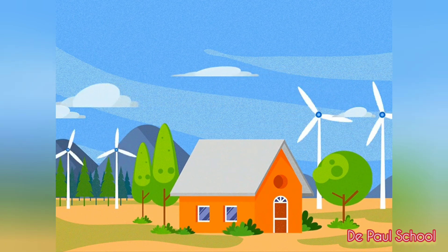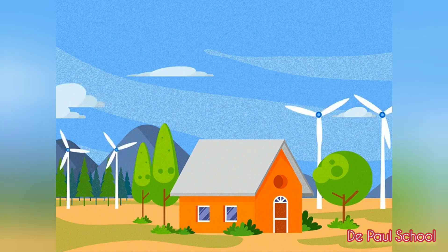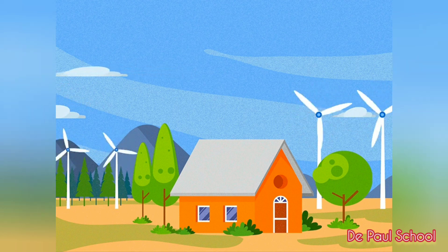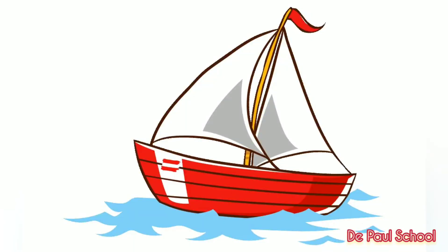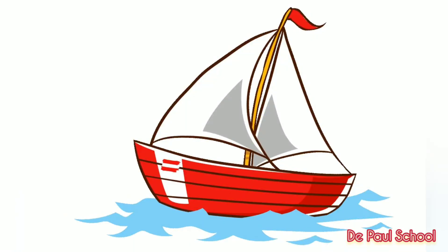Wind energy is used by windmills to set a turbine in motion and produce electricity. Wind energy is also used for sailing of boats and many other purposes.